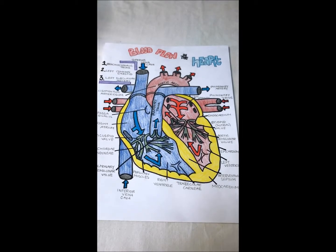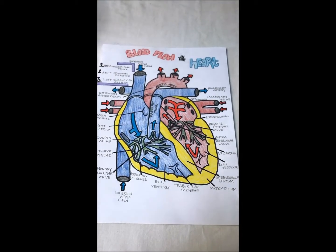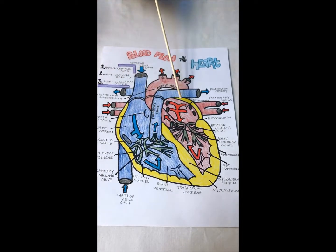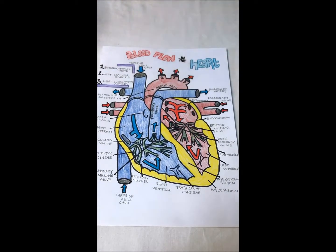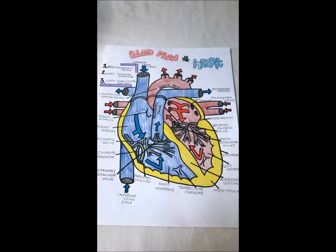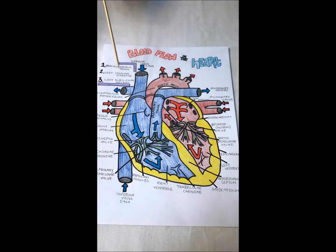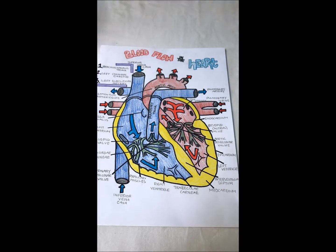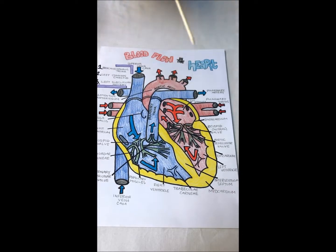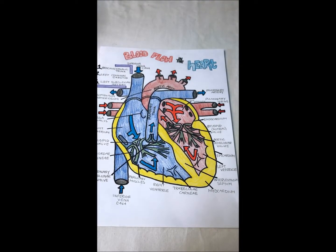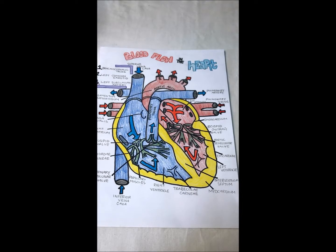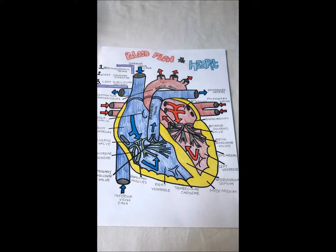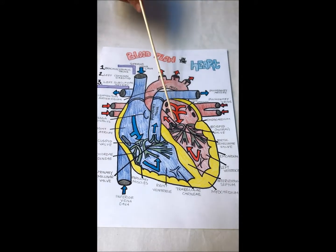Now we have all the parts of the heart and how the blood flows through them. There are four chambers: the right atrium, the right ventricle, the left atrium, and the left ventricle. There are also four valves. The tricuspid valve is between the right atrium and right ventricle. The bicuspid or mitral valve is between the left atrium and left ventricle. Between the right ventricle and pulmonary trunk is the pulmonary semilunar valve, and between the left ventricle and aorta is the aortic semilunar valve.